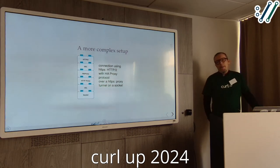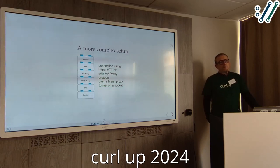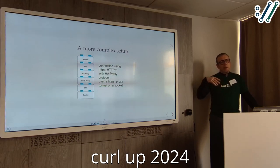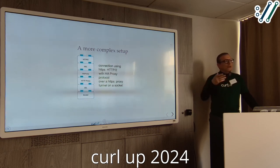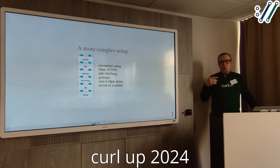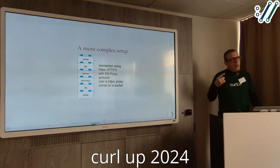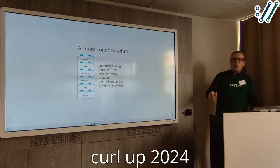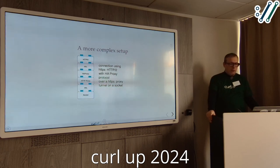The poll-set callback lets us ask every component what to wait for to know when to call it again. For example: you're sending a request, you use the send method, it returns that it would block and only part was written. Then the multi-handle asks all connections which sockets they want to monitor in which direction, and waits for the next event before calling again to send more data.